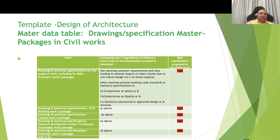I am proposing a template for each of these functions — design of architecture, design of materials, and MEP — to clarify how to develop and populate this template. There are three columns: the first column is the field; the second column is the consequence if the ingredients of the field are inaccurate, or these are unauthorizedly accessed or amended; and the third column is the risk classification proposed at the field level. For example, in row one, the field is drawing and technical specification for the scope of work including BOQ for structure work packages, covering items like different kinds of TMT bars, cement, and the grade of cement.